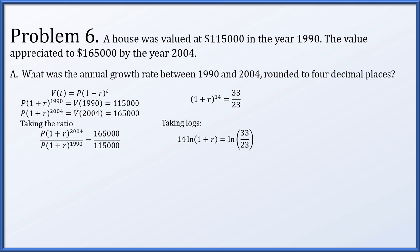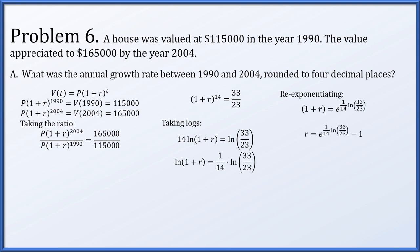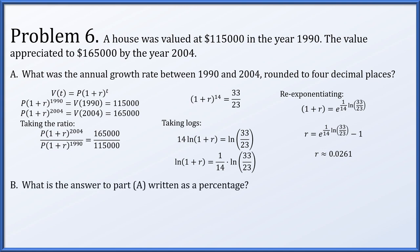Now we wish to solve for r, the annual growth rate, buried under the exponent. Taking the natural log of both sides brings the exponent out as a scalar: 14 times the logarithm of (1 plus r) equals log of 33 over 23. Dividing both sides by 14, then re-exponentiating both sides: e to the log of (1 plus r) is just (1 plus r), and on the right we get e to the (1/14 times the natural log of 33 over 23). Subtracting 1 from both sides, r is approximately 0.0261, or 2.61%.